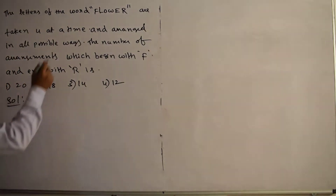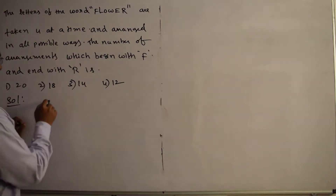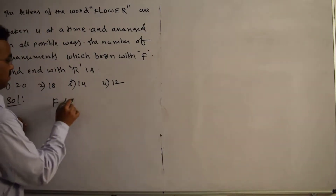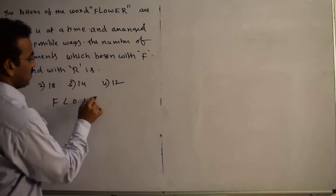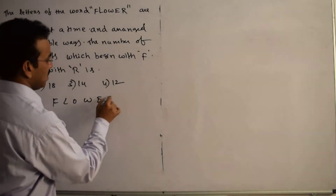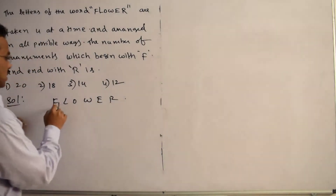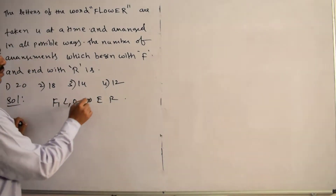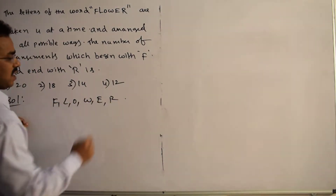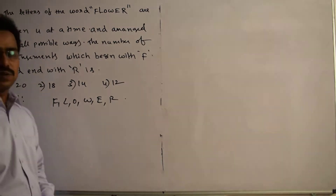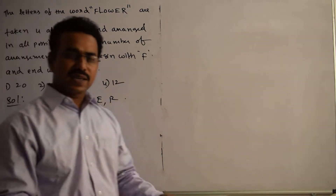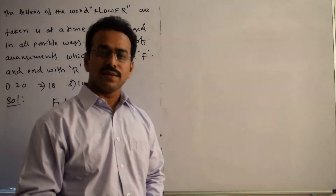The given word is FLOWER: F-L-O-W-E-R. So the letters are F, L, O, W, E, R. We are forming 4-letter words from these letters.